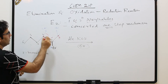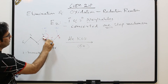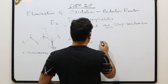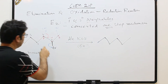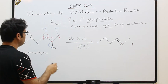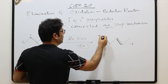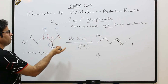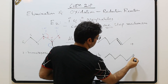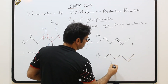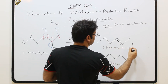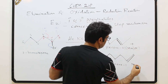If a hydrogen is removed from case A (carbon one), the double bond forms there giving hex-2-ene. If the hydrogen is removed in case B (carbon three), the double bond forms giving hex-1-ene. So hex-2-ene is the major product and hex-1-ene is the minor product.